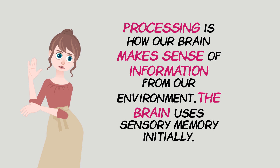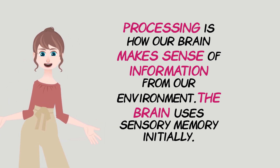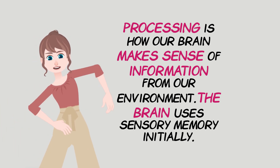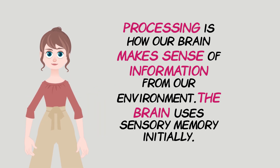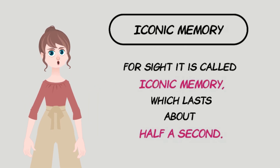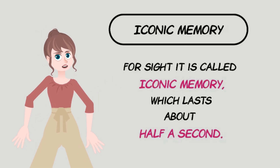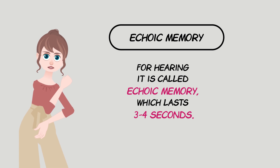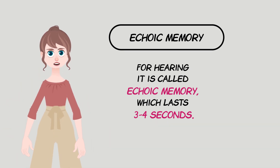Processing is how our brain makes sense of information from our environment. The brain uses sensory memory initially. For sight, it is called iconic memory, which lasts about half a second. For hearing, it is called echoic memory, which lasts three to four seconds.